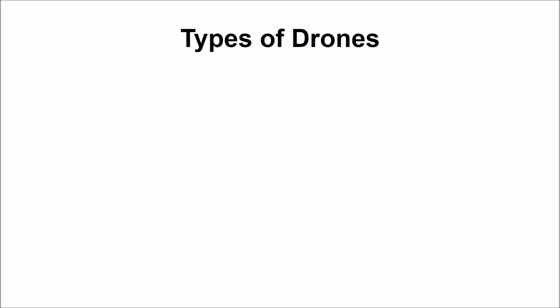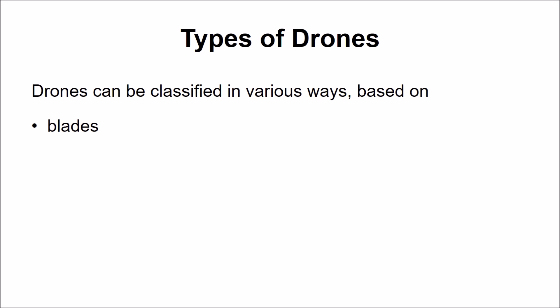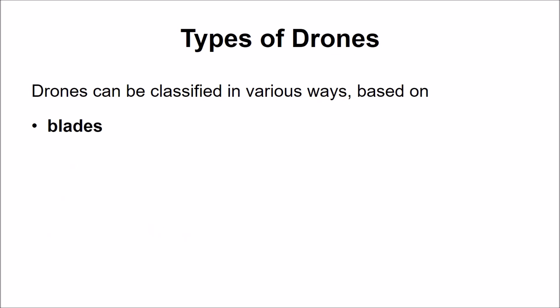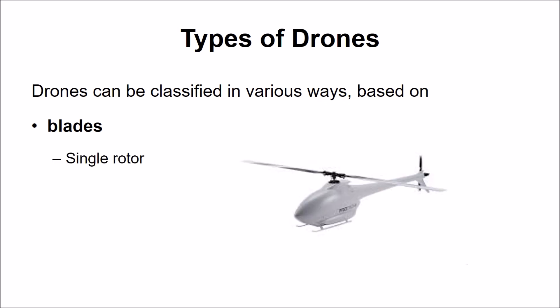Drones can be classified in various ways — based on the blades they have, their use, their size, or their readiness to be airborne. Most commonly, they are classified based on their blades. Single rotor drones are one of the most basic types, more like unmanned helicopters, with a single main rotor and an anti-torque device. They can generate thrust much more efficiently than multi-rotor drones and are particularly suited for long flight times.